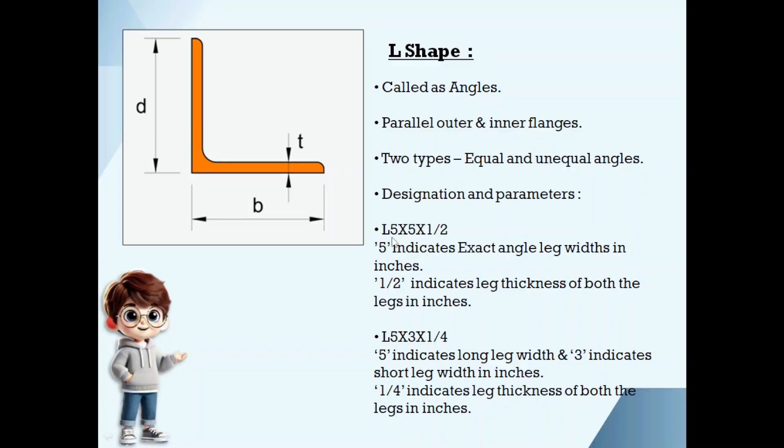These angles are of two types: one is equal angle and another one is unequal angle. If you take L 5 by 5 by 1/2, depth and width of the angle is 5 inches and thickness is 1/2. Since depth and width both are equal, we call this as equal angle. If you take L 5 by 3 by 1/4, depth is 5 inches, width is 3 inches, thickness is 1/4 inches. Depth and width are not equal. At this condition, we call this angle as unequal angle.